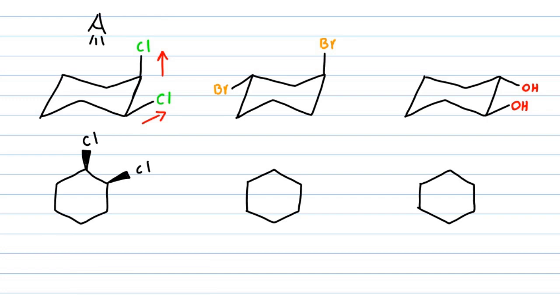So here, two chlorines are cis to each other. For the bromines, we see that one of the bromines is upward and another one is downward. So here...